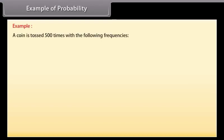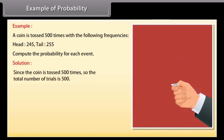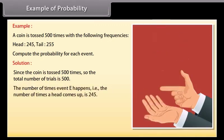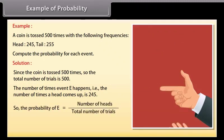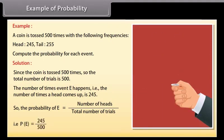Example of probability. Example: A coin is tossed 500 times with the following frequencies: Head 245, Tail 255. Compute the probability for each event. Solution: Since the coin is tossed 500 times, the total number of trials is 500. The number of times event E happens, that is, the number of times a head comes up is 245. So the probability P(E) equals 245 upon 500, which equals 0.49.